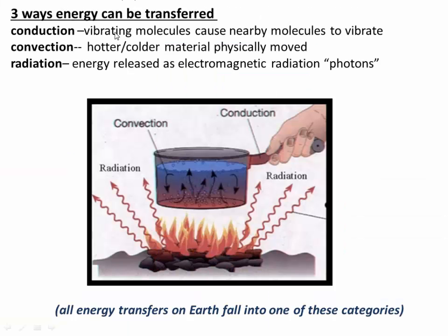There are three ways we can transfer energy. The first is conduction — that's when you place one hot object next to another and they heat up. For example, if you have a hot pot over a fire, that heat is going to conduct into the handle and make it hot. Basically, molecules vibrating in the hotter part of the pot start to vibrate molecules in the handle and heat it by conduction.